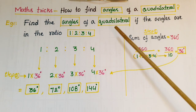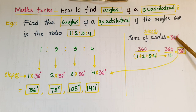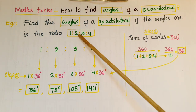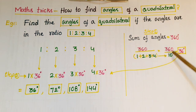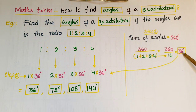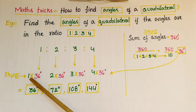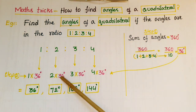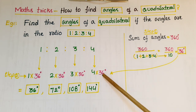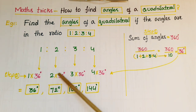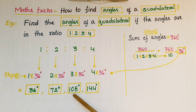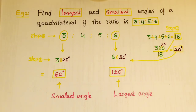We know that the sum of angles of a quadrilateral is 360 degrees. Add all the ratio numbers: 1+2+3+4 = 10. So 360 divided by 10 equals 36 degrees. Now multiply 36 degrees with each ratio number: 1×36 = 36°, 2×36 = 72°, 3×36 = 108°, and 4×36 = 144°. These are the four angles of the quadrilateral.